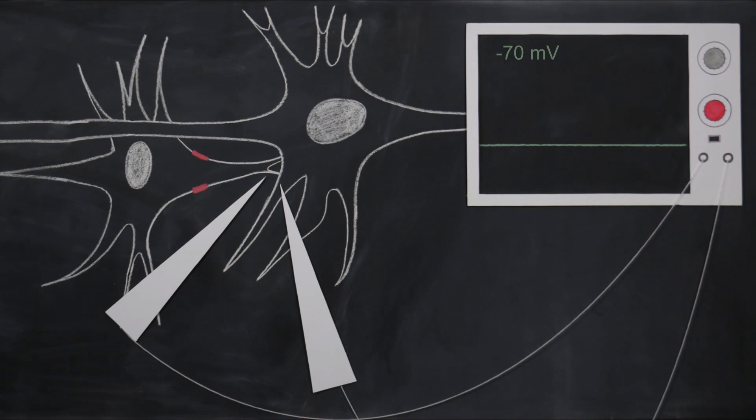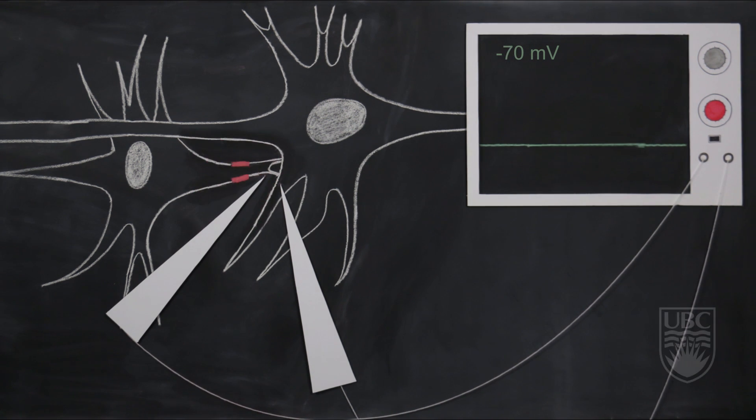In summary, EPSPs and IPSPs travel very rapidly, they are graded responses, and they are decremental in nature.